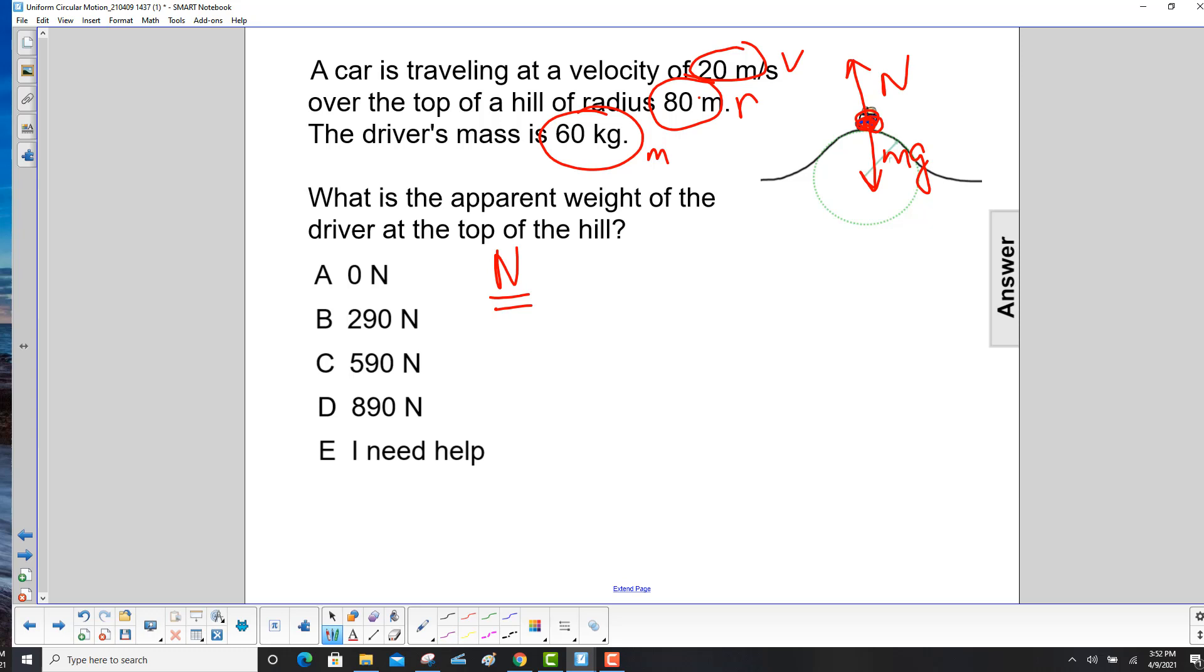So let's do Newton's second law. Since the gravity force is in the same direction as this acceleration, centripetal acceleration is always towards the center, we give that a positive value. Then we subtract the normal force, which is in the up direction, and that equals mv squared over R.